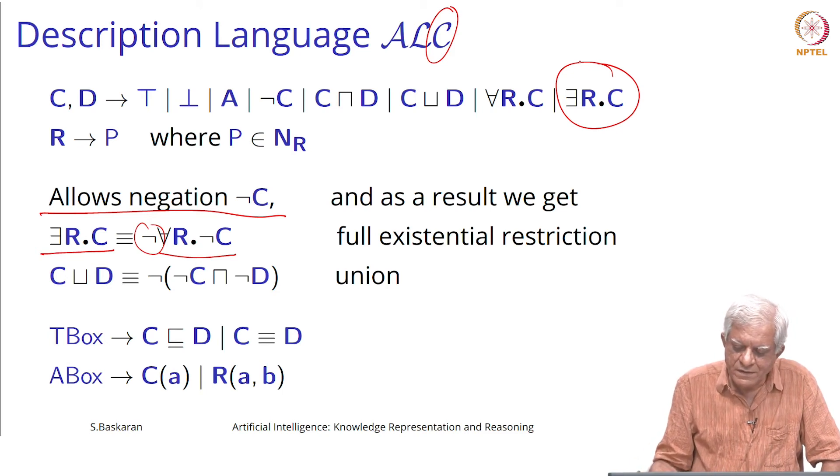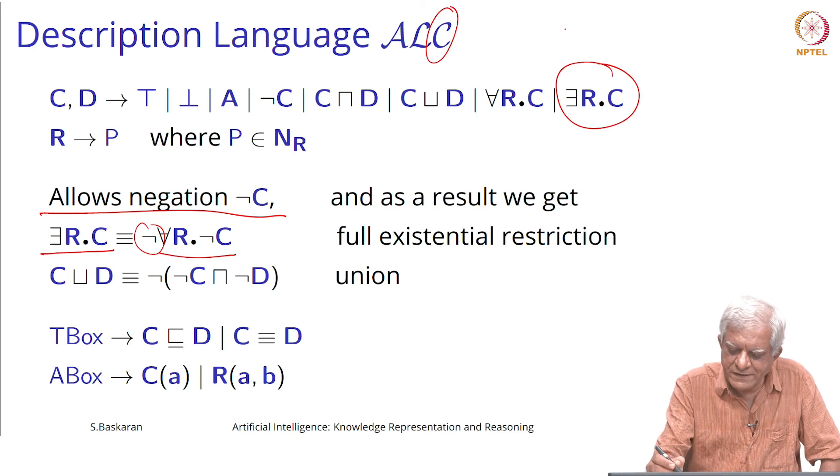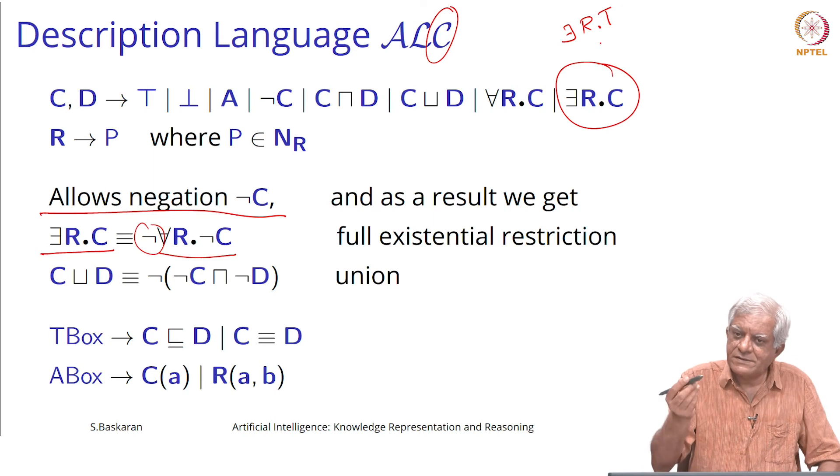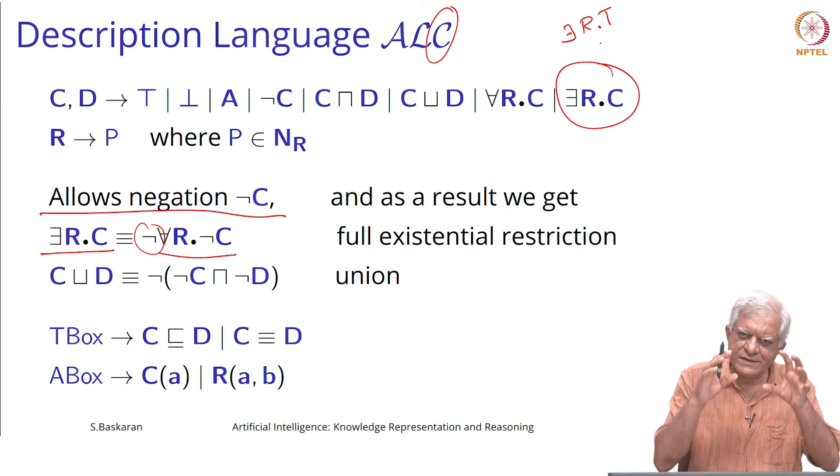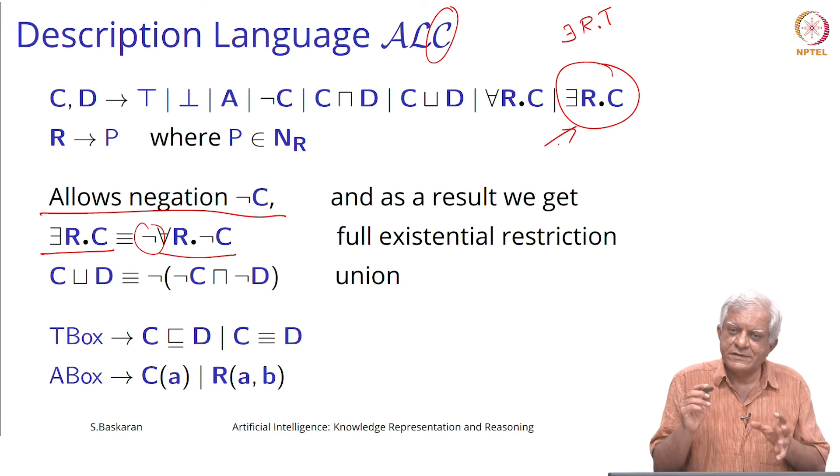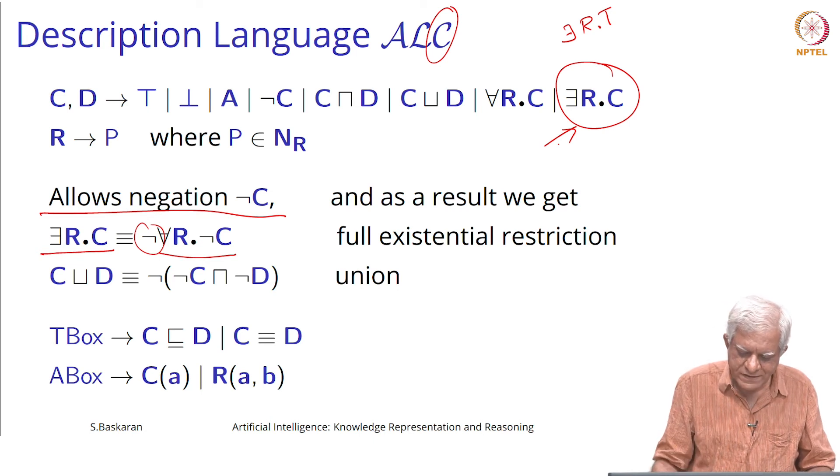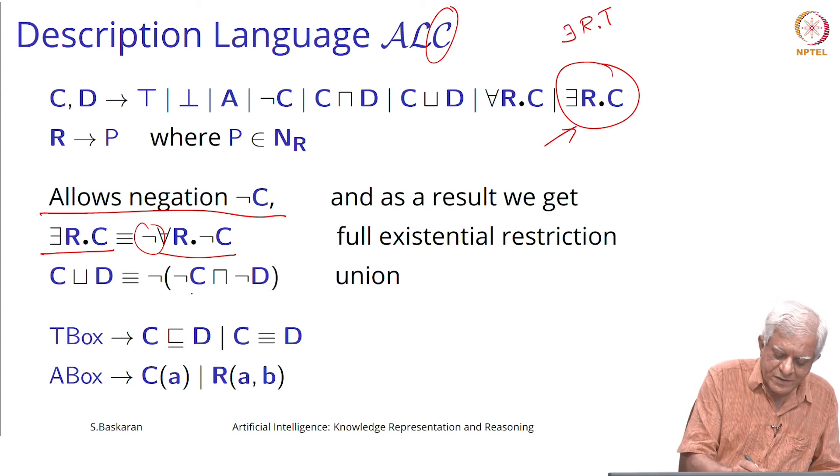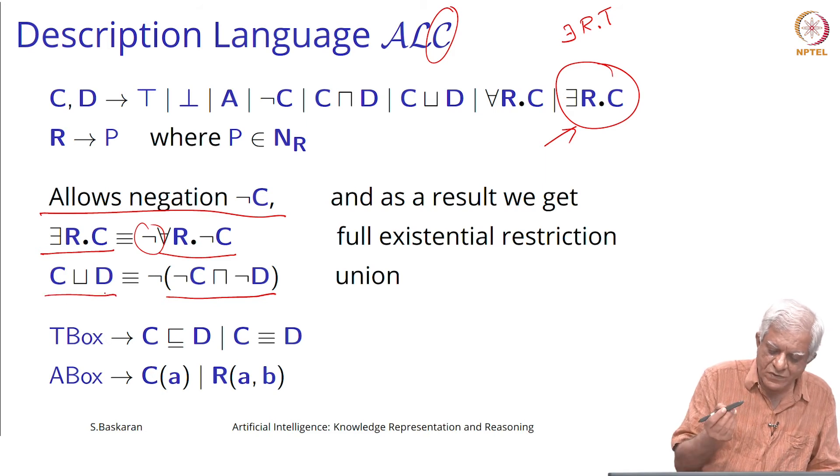You will also see that the relation that is there in AL, which means there exists an R which comes from a class T, subsumes this particular role that simply says that you must have at least one role filler. That is something new we can see here, it is more specific than AL. The other thing as you can see is that because you can negate concepts, you can take this and this will give us the union of the two concepts.